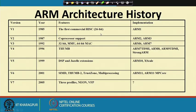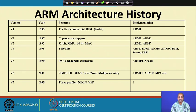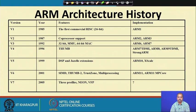A brief history of ARM: it started in 1985 as the first 26-bit commercial RISC processor, called ARM 1. In 1987, version 2 came with co-processor support, implemented in ARM 2 and ARM 3. In 1992, version 3 brought a 32-bit processor with a memory management unit and a multiply-accumulate unit — useful for signal processing — implemented in ARM 6 and ARM 7.